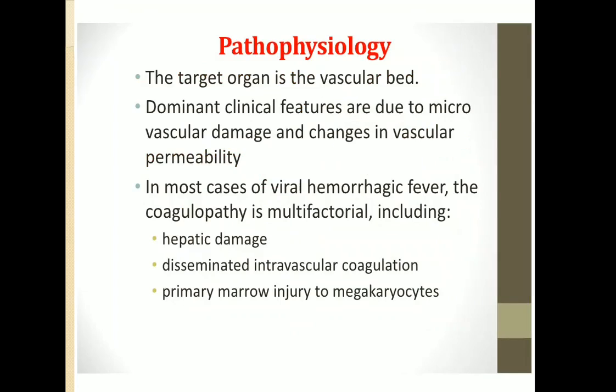Discussing the pathophysiology of CCHF: the target organ is the vascular bed. Dominant clinical features are due to microvascular damage and changes in vascular permeability. In most cases of viral hemorrhagic fever, the coagulopathy is multifactorial, including hepatic damage, disseminated intravascular coagulation, and primary marrow injury to megakaryocytes.